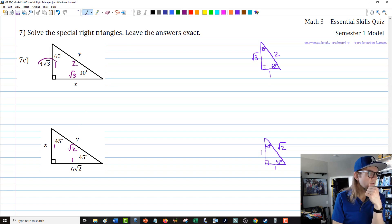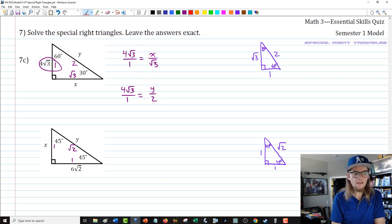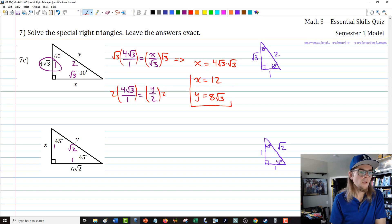It's all about setting a proportion. We'll go outside over inside. So 4 root 3 over 1 equals x over the square root of 3, and 4 root 3 over 1 equals y over 2. I'm going to multiply both sides by root 3 in the first case. That gives me x equals 4 root 3 times root 3. Let's clean that up right now. That's going to be 4 times 3, which is 12. For the y one, we can multiply both sides by 2. That gives me 2 times 4 root 3 equals y, or y equals 8 square root of 3.